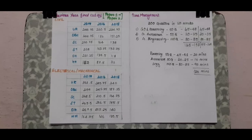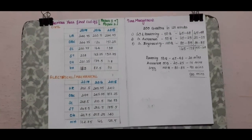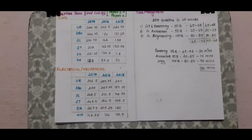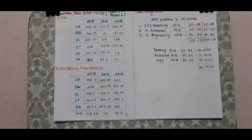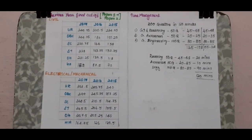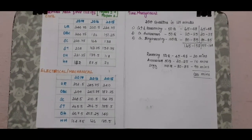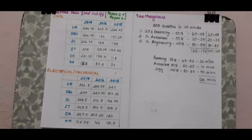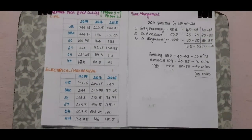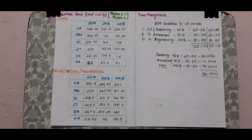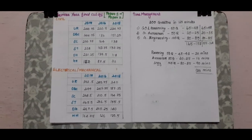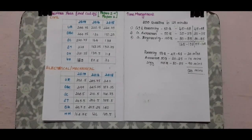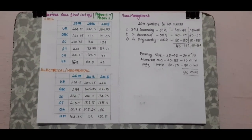The number of questions is around 82 to 85 in the engineering section, and you should take about 90 minutes for that. For awareness, keep 15 minutes. For reasoning, start with 15 minutes, then 5 minutes for review. In the last 5 minutes, solve any remaining problems.